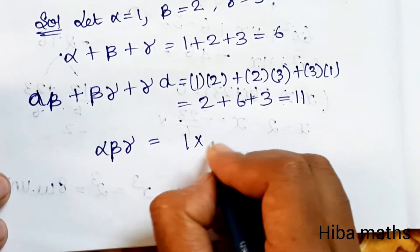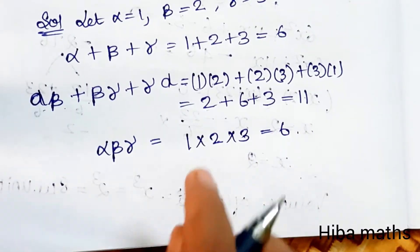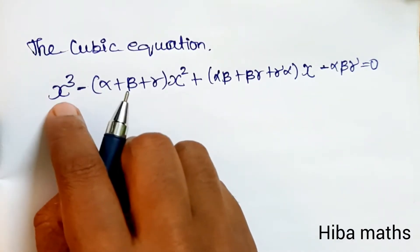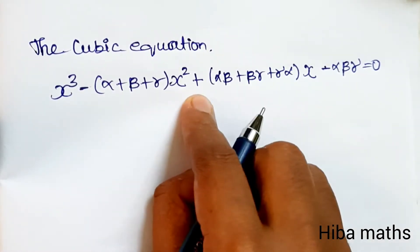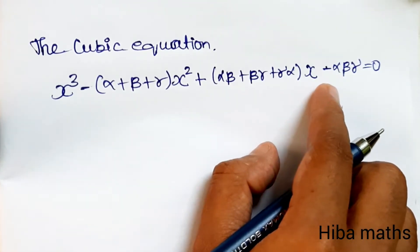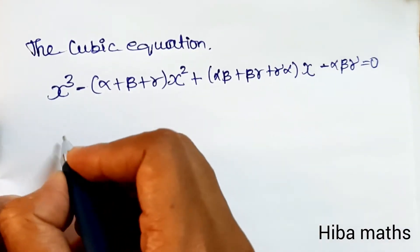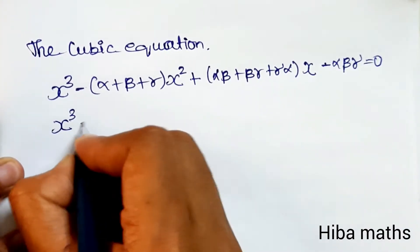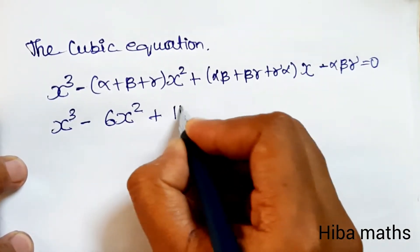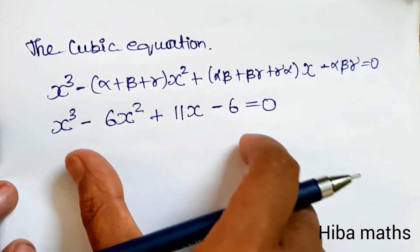Product of the roots: 1 × 2 × 3 = 6. The general cubic equation is x³ minus (alpha + beta + gamma)x² plus (alpha·beta + beta·gamma + gamma·alpha)x minus alpha·beta·gamma = 0. Substituting: x³ minus 6x² plus 11x minus 6 is equal to 0.